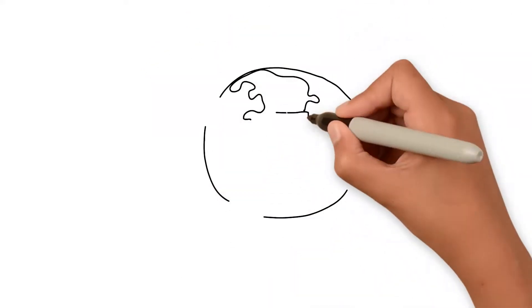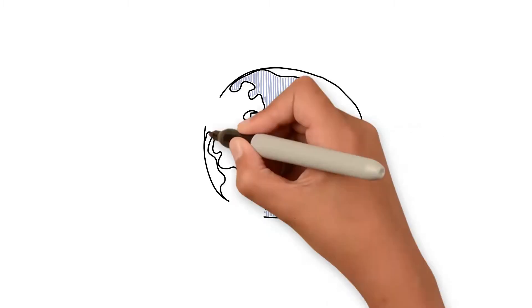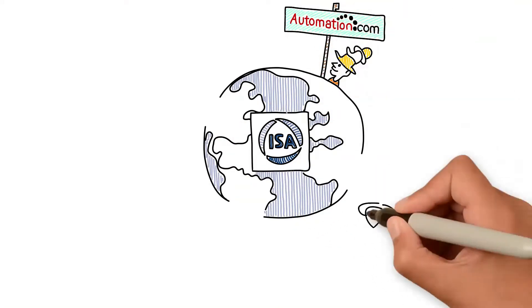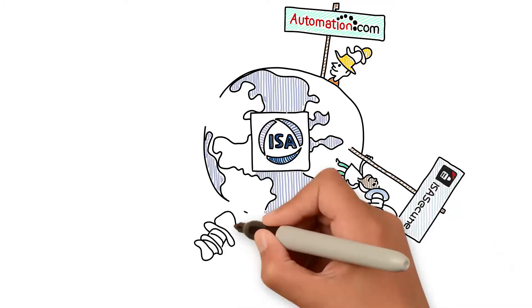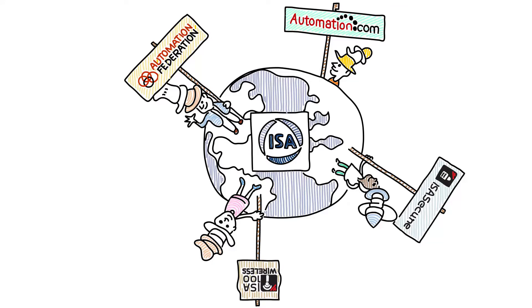That's why ISA has expanded to include an entire family of brands. Automation professionals wear a lot of hats and our industries need support in many different areas. So ISA has created and acquired different organizations to serve the unique needs of people around the globe.